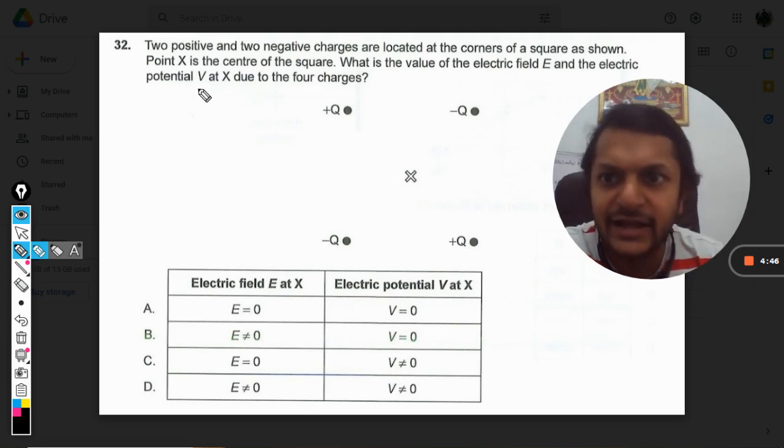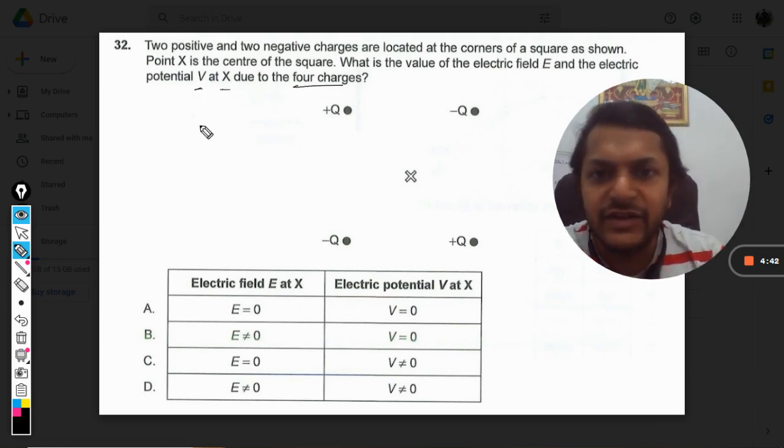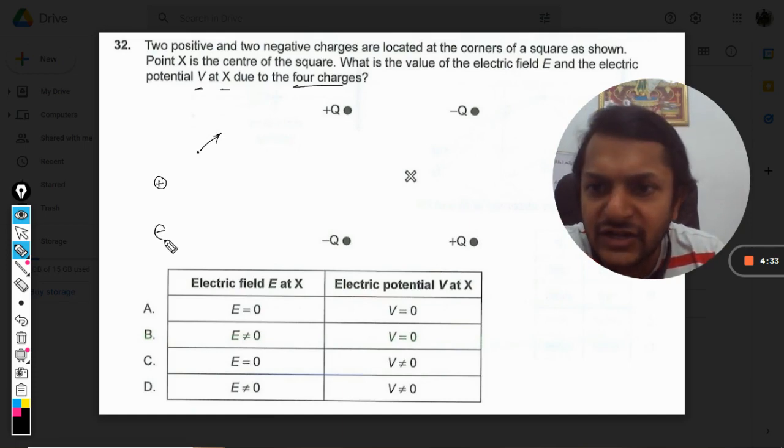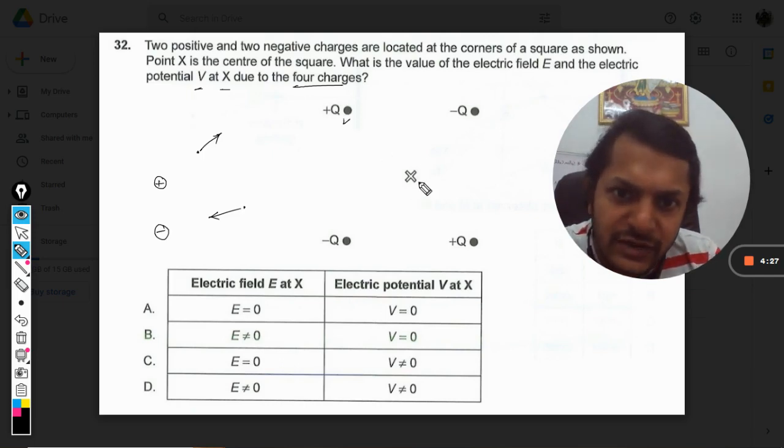So we know that a positive charge always casts an electric field which is away from it, and a negative charge always has an electric field which is towards it.